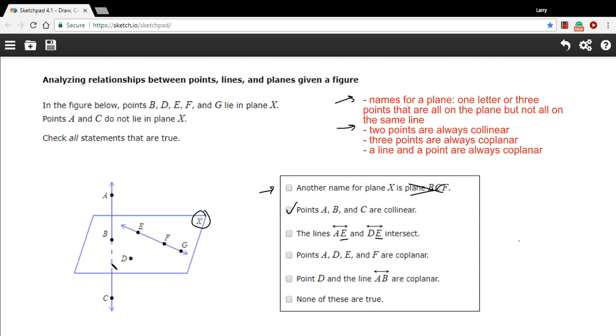Point E is on both those lines. If you drew in AE, it would go that way. If you drew in DE, it would go that way. And they'd intersect right here at E. So that one is true.